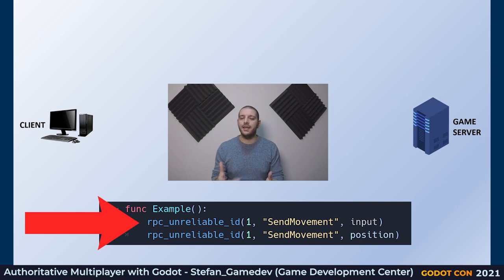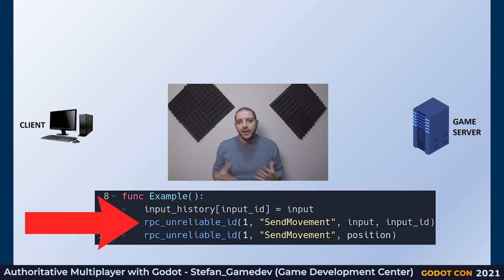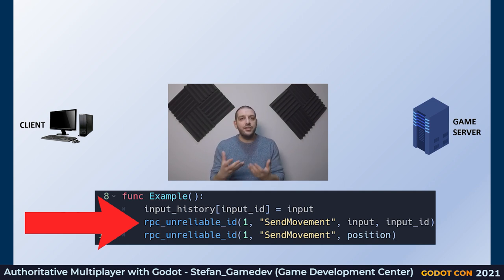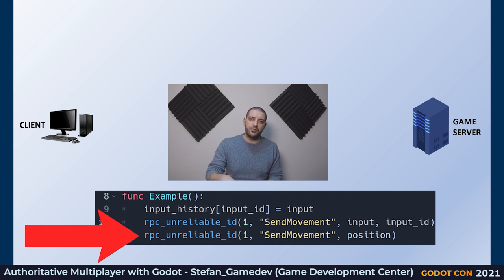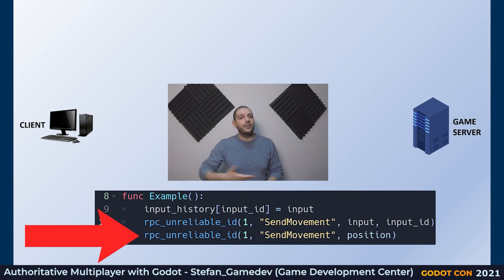We can counter this by giving all input sent from client to server an ID, having the server check if all IDs were received, and if one is missing, re-request it from the client — meaning the client needs to retain a history of sent input. You can see how this protocol starts to become more complex. The advantage, though, is that it's really difficult to cheat: the client only sends 'I move forward' and the server determines the speed.